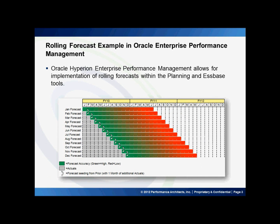Oracle Hyperion Enterprise Performance Management allows for implementation of rolling forecasts within the planning and S-based tools. The diagram you see below is an example of re-forecasting monthly and then backfilling actuals into the closed months.